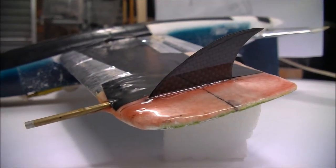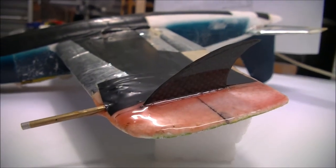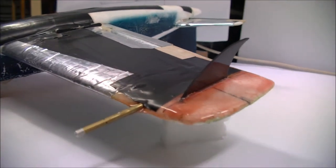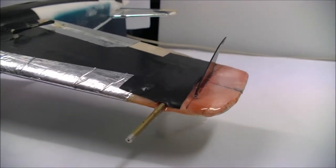This winglet sort of thing on the tip here was placed just to protect the pitot tube from digging into the ground on landings.